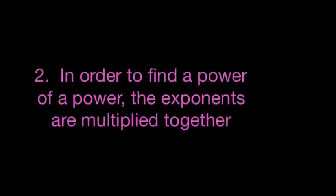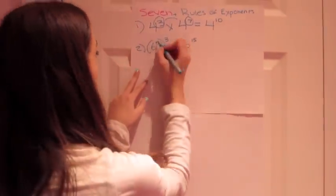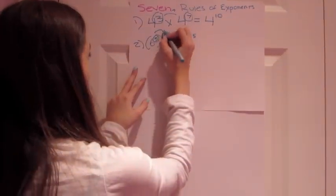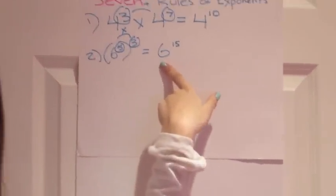The second rule is that in order to find a power of a power, the exponents are multiplied together. For example, solving 6 to the fifth to the third power, you would multiply 5 and 3 with each other and keep 6 the same. So the answer would be 6 to the fifteenth power.